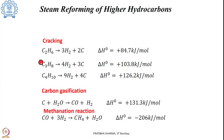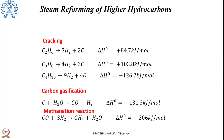Other than the reforming process that occurs in the primary reformer, several other processes can also occur, like cracking. Hydrocarbons such as ethane, propane, or butane can crack to give carbon and hydrogen. Carbon gasification can also occur in the reactor, and at the same time methanation can also occur, wherein the carbon monoxide which is formed can again react with hydrogen giving methane.